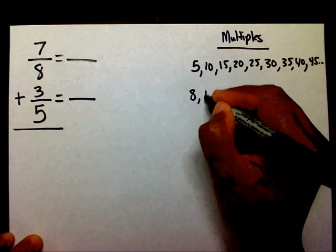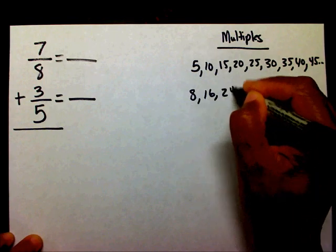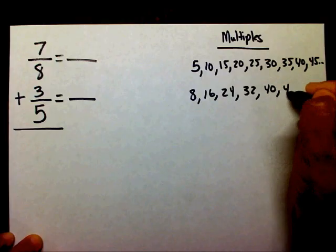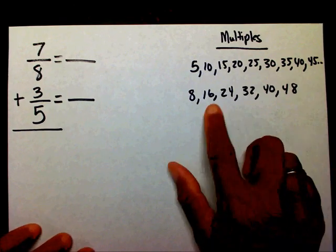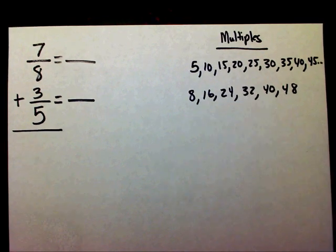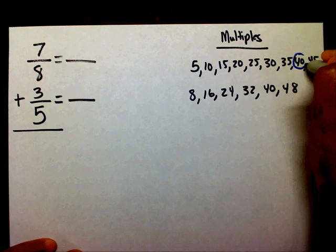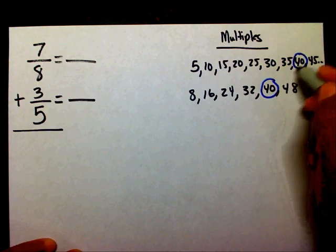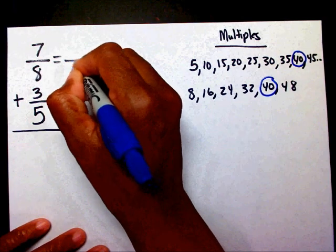For eight, I have eight, sixteen, twenty-four, thirty-two, forty, and forty-eight. As you can see, they share a common multiple of forty. This is going to be my new denominator.